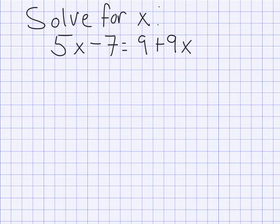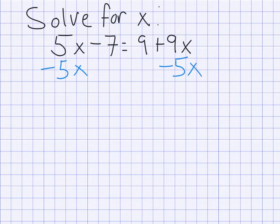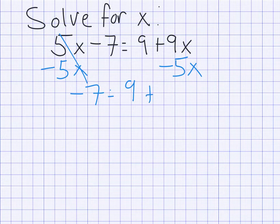First we're going to start by reviewing a little bit of basic algebra. If you have an equation like this and you want to solve for x, your main goal is to get all of your x's on one side and all of your numbers on the other. Keep in mind it's an equation, so whatever I do to one side I have to do to the other. I would start by taking the 5x and subtracting it to the other side to combine it with the 9x, so we subtract 5x from both sides.